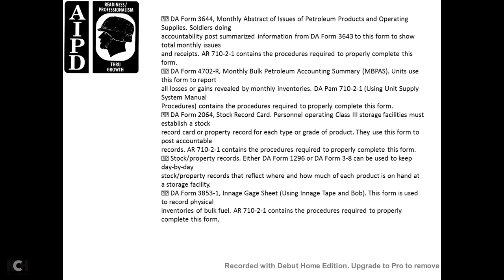DA PAM 710-1 with the unit using unit supply system manual procedure, contained with the procedure required to complete DA form 2064 — the SAC record card personal — with the operating class for the storage facility. The facility must establish a SAC record and property record for each type of property, using the form for the accountability record. AR 710-21 contained with the procedure required to complete this form.